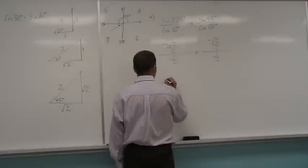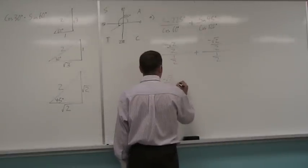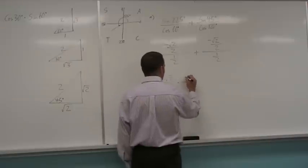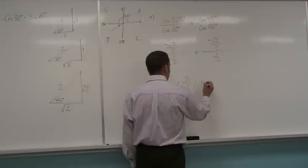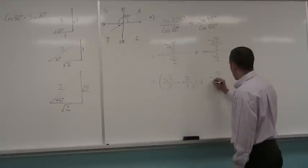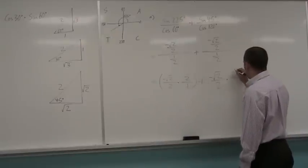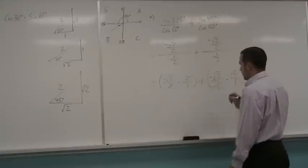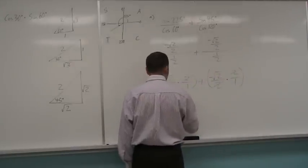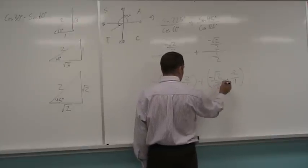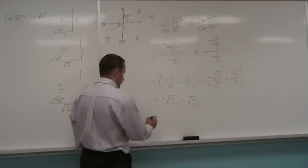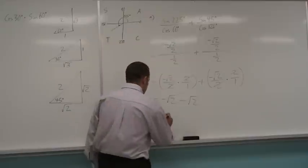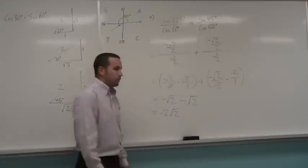So this becomes negative square root of 2 over 2 times the inverse of this, or the reciprocal, which is 2 over 1 plus negative square root of 2 over 2 times the reciprocal, which is 2 over 1. These are going to cancel out. So I'm going to be left with negative square root of 2 plus the negative is going to give me subtract square root of 2. So negative root of 2 subtract another root of 2, simply negative 2 root of 2. And we're done.